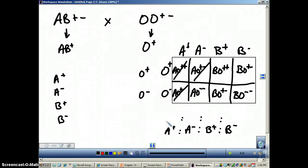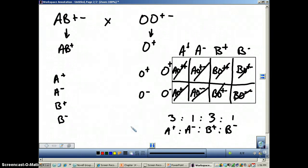Yep. How many of them are going to be A negative? One. How many are going to be B positive? One, two, three. And how many are going to be B negative? One. So there's an example of how to do one of these ABO and Rh blood type problems.